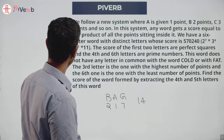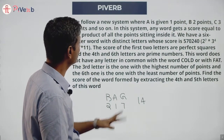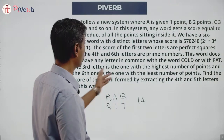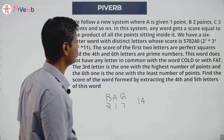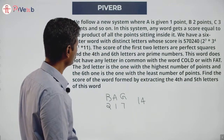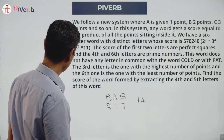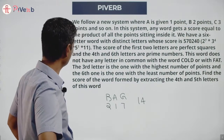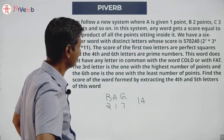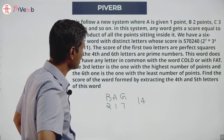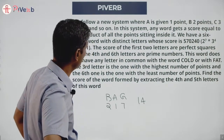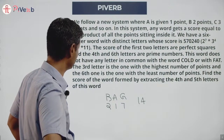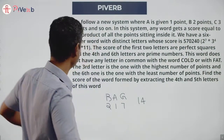We have a six-letter word with distinct letters whose score is 570240. They've broken that down as 2⁷ × 34 × 3⁴ × 5 × 11. The score of the first two letters are perfect squares, and the fourth and sixth letters are prime numbers. This word does not have any letter in common with 'cold' or with 'fat'. The third letter has the highest number of points and the sixth has the least. Find the score of the word formed by extracting the fourth and fifth letters.